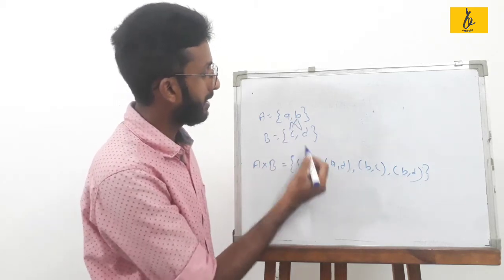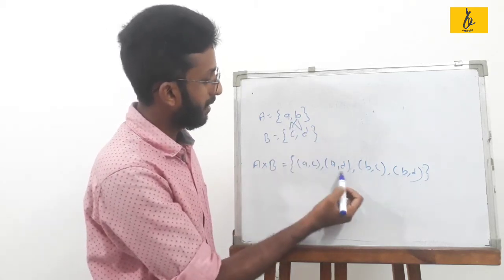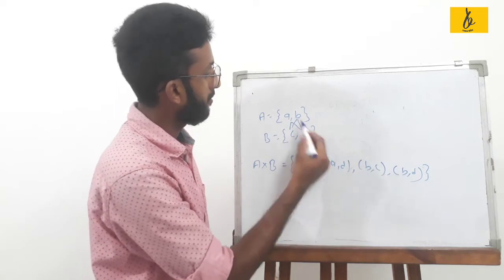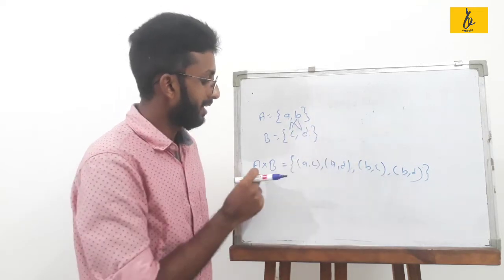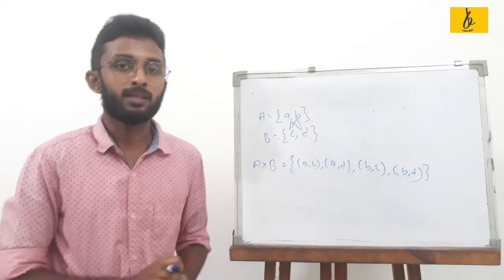In the Cartesian product: (a,c) is a pair, (a,d) is a pair, (b,c) is a pair, (b,d) is a pair. This is the cross product.